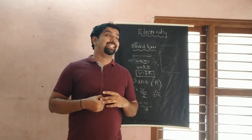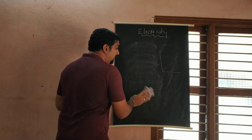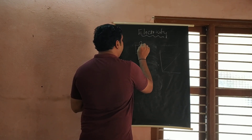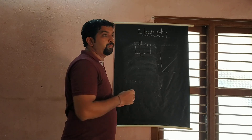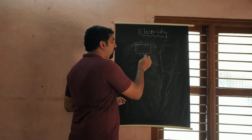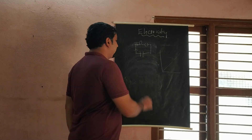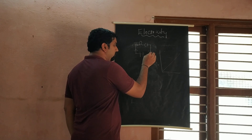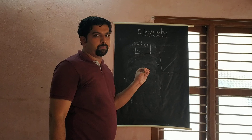An electric circuit is the path through which the electric current flows. A simple circuit includes a bulb, a battery, and a key. The current flows through the different components. There are two types of circuits: an open circuit, where the path is broken somewhere, and a closed circuit, where everything is connected forming a complete loop.